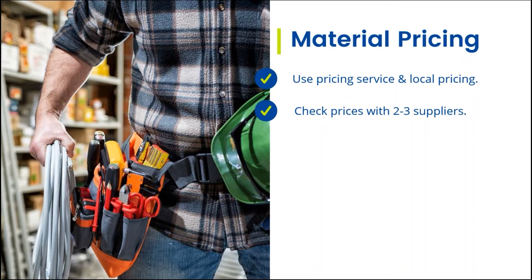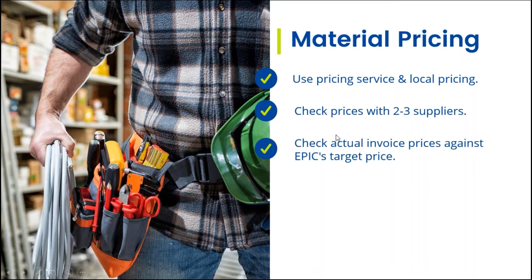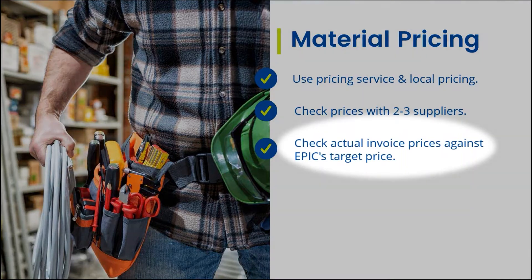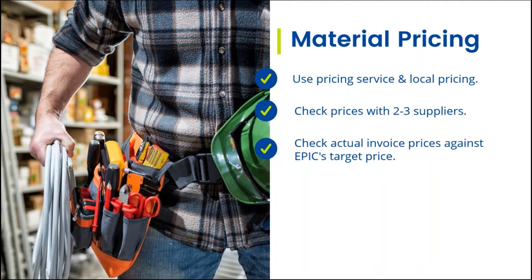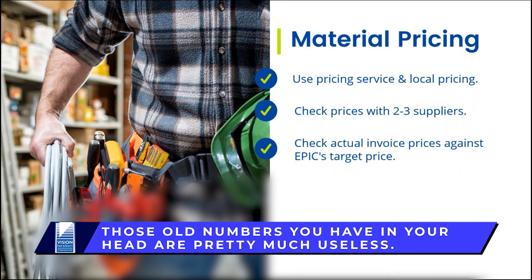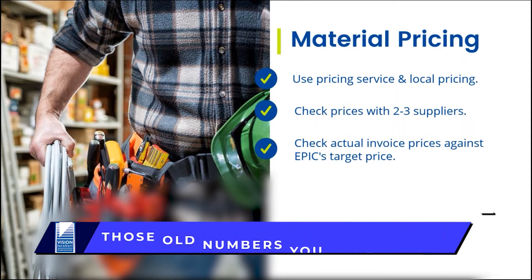Here's one thing people just don't do enough: they don't check the price on the invoice against some kind of standardized price. They eyeball it and say 'well, that looks okay.' If you can compare it to a standard price like the target price in EPIC — if EPIC says half-inch EMT is $60 per 100 and your invoice shows $75, that's probably worth following up on. With prices changing like they are lately, the numbers you have in your head from two months or two years ago are pretty much useless.